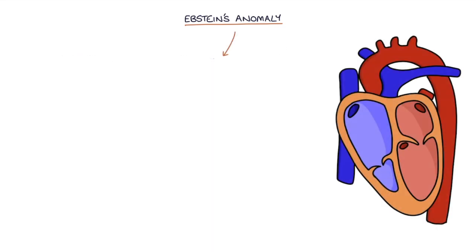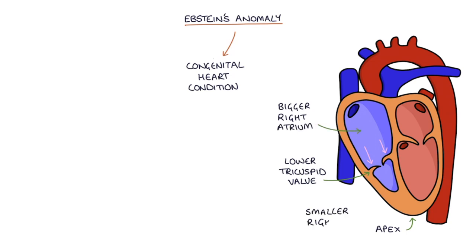Epstein's anomaly is a congenital heart condition where the tricuspid valve is set lower in the right side of the heart towards the apex of the heart. This causes a bigger right atrium and a smaller right ventricle. This leads to poor flow from the right atrium to the right ventricle and therefore poor flow to the pulmonary vessels.